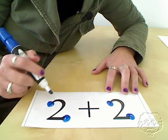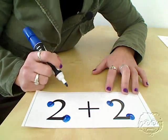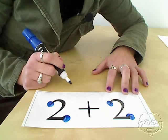Now we can add our dots together. 1, 2, 3, 4. 2 plus 2 equals 4. Sure!